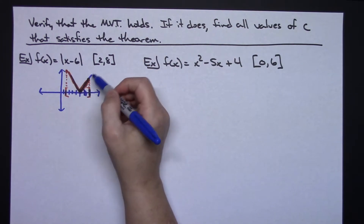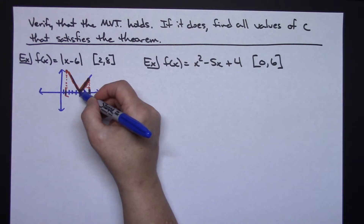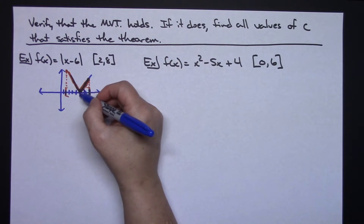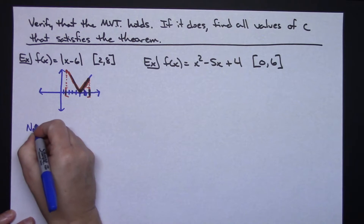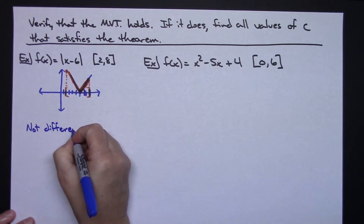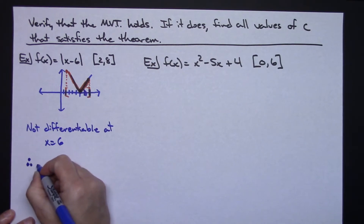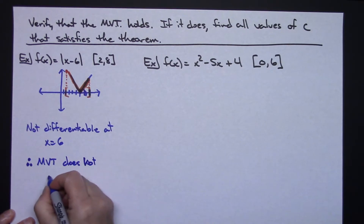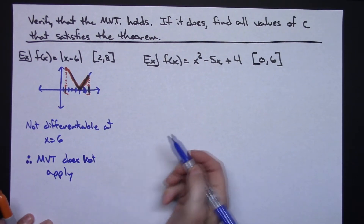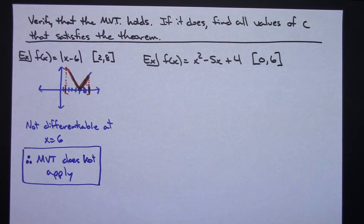A V shape is continuous on that entire interval, so it does meet that condition. But it does not meet the condition about being differentiable over the entire interval, because functions that have a cusp in them are not differentiable. Right there at x equals six, the function is not differentiable. Therefore, the mean value theorem does not apply, and I don't have to find any value of c because the theorem itself does not apply — it doesn't meet the differentiability condition on the open interval.